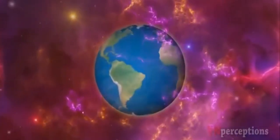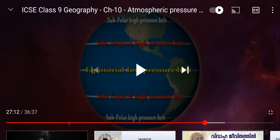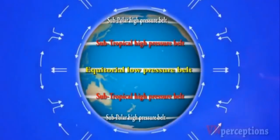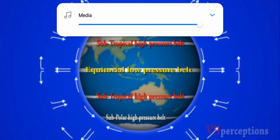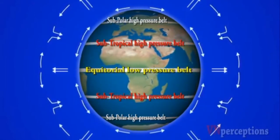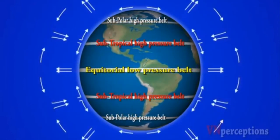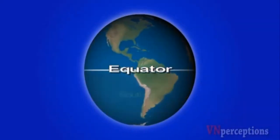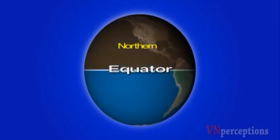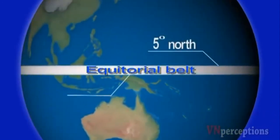In this video, we shall learn about the various pressure belts and wind patterns that have developed on planet Earth. While understanding the basic concepts behind the development of pressure belts, we will not take into consideration the tilt of the axis and the influence of land-water distribution. The equator divides the globe into southern and northern hemispheres, and the equatorial belt extends up to 5 degrees north and 5 degrees south.